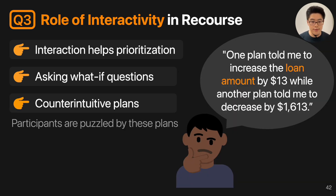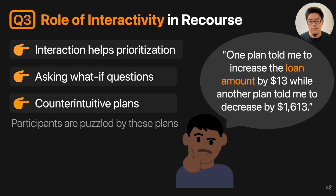Third, when deploying the model in our study, some features are not monotonically increasing or decreasing, which can create continuity issues in plans — for example, on some features, the likelihood of getting a loan might increase a little, then decrease, then increase again, producing weird hiccups in the recourse plans. We asked participants to report these issues, and many did — for example, one participant found that one plan told them to increase the loan amount by $13 while another plan told them to decrease it by $1,600. This finding tells us it's important to vet and fix models before deploying them in real life, otherwise participants can be puzzled. There are also potential hacks to game the system to get loan approval by only increasing the loan amount by $13.